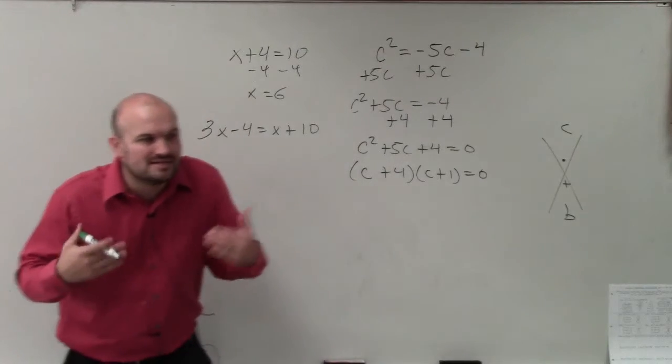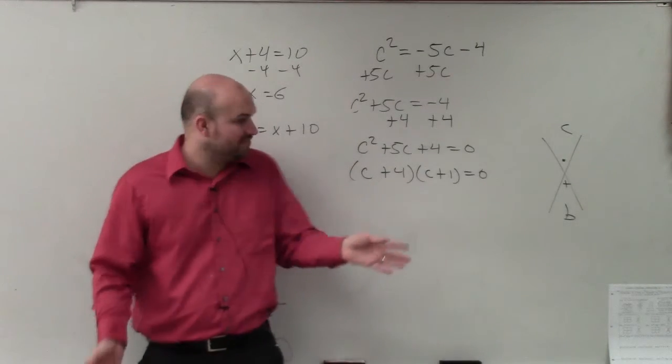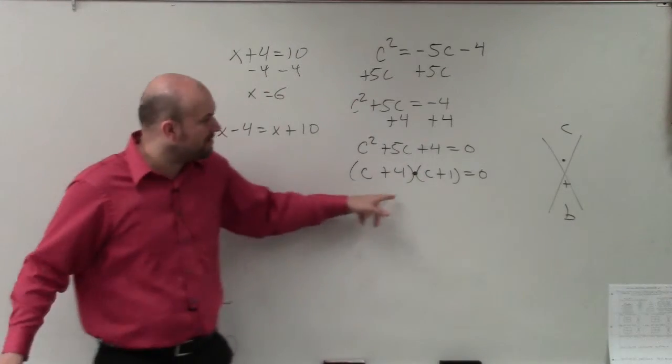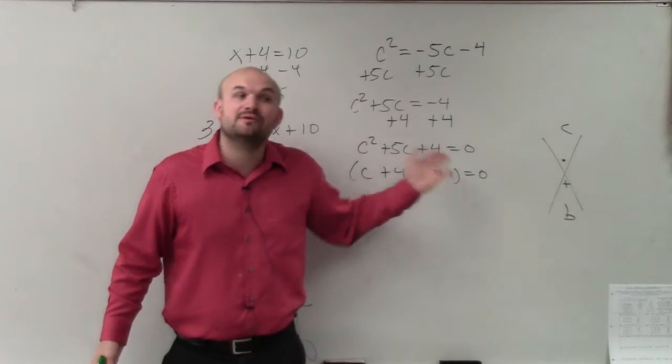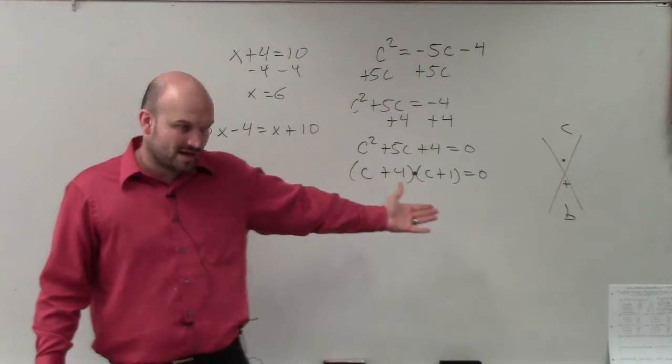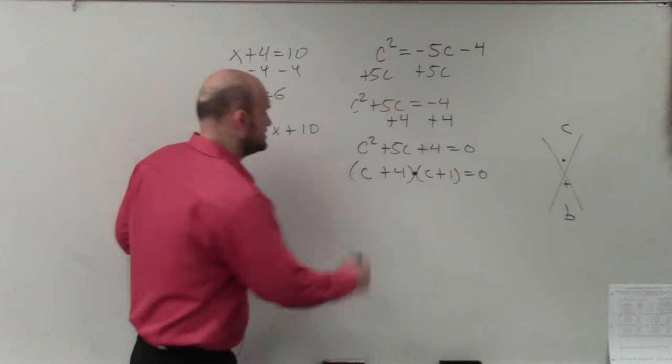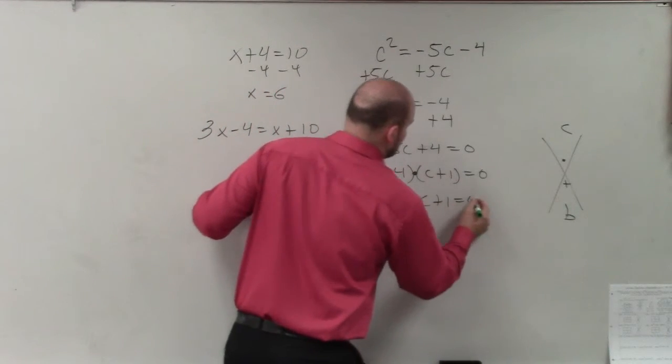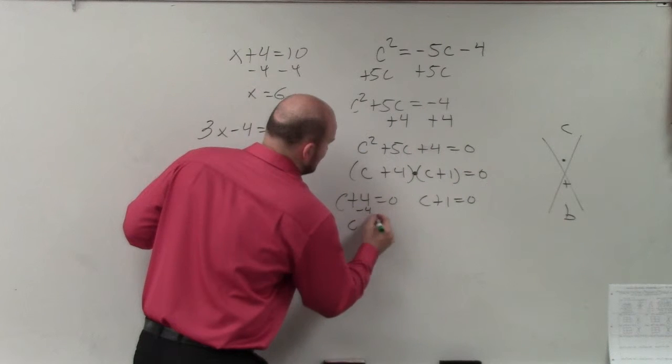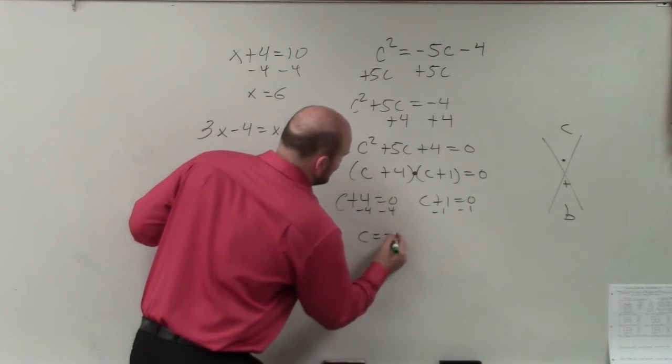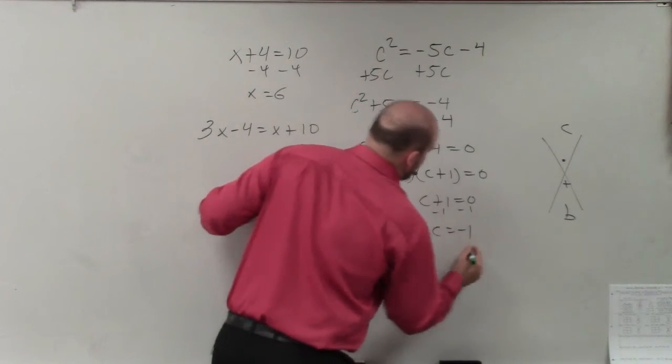Then the reason why I gave you guys that focus lesson, because now you have a product. These are separated by multiplication. You have a product equal to 0. So when you have a product equal to 0, you can apply the 0 product property and set them both equal to 0. c plus 4 equals 0, c plus 1 equals 0. Subtract 4, subtract 4. Subtract 1, subtract 1. c equals negative 4, c equals negative 1.